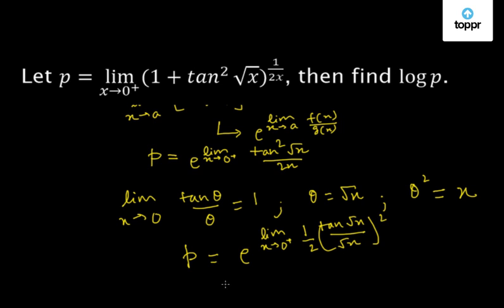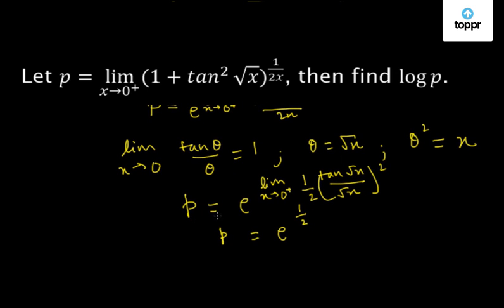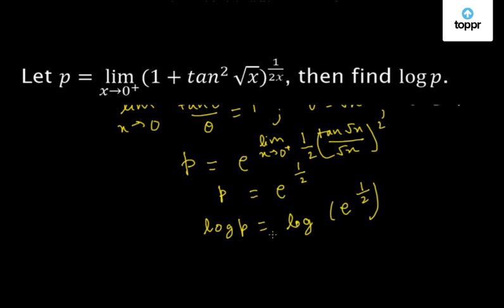So p equals e to the power one half. Taking log on both sides, log p equals log of e to the power one half. Since this log is the natural log with base e, we get log p equal to one half. So finally, this is our answer.